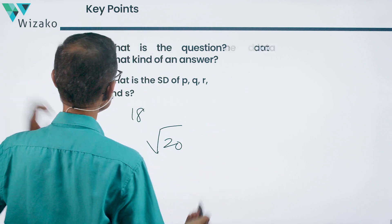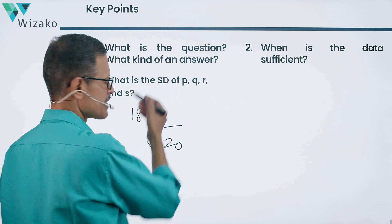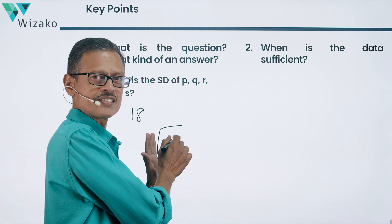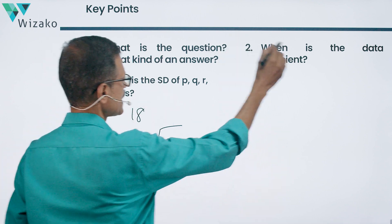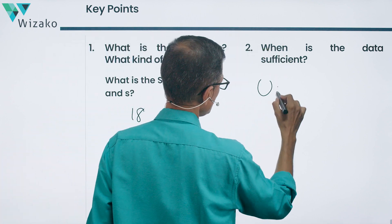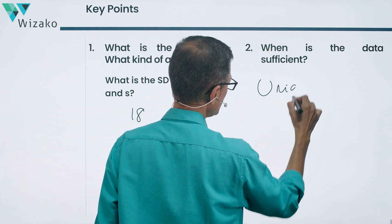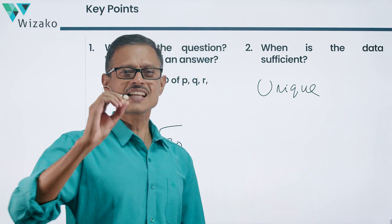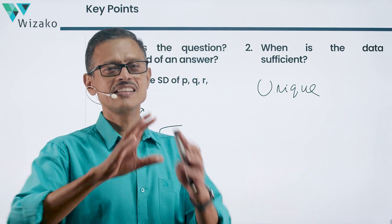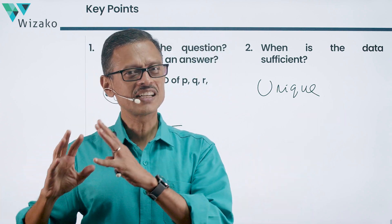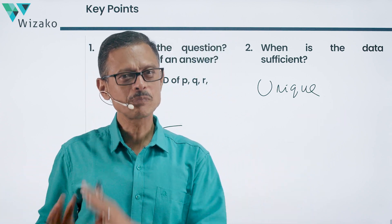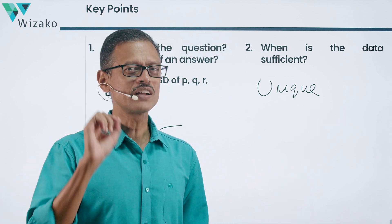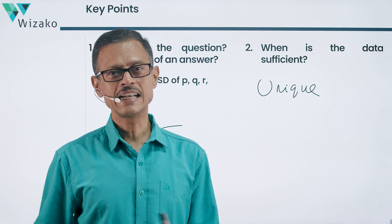When is the data sufficient? It's a 'what' question, so the answer is a number. The data is sufficient when we have a unique value — if I'm able to say the standard deviation is 7, or the standard deviation is 7.93, one single number, the data is sufficient.